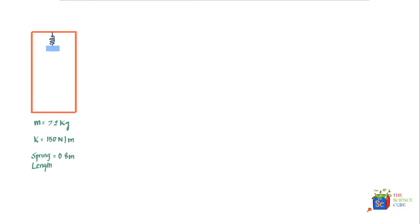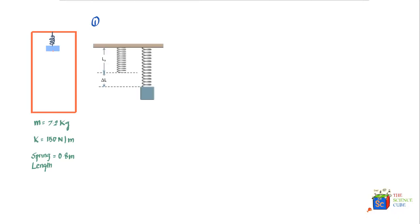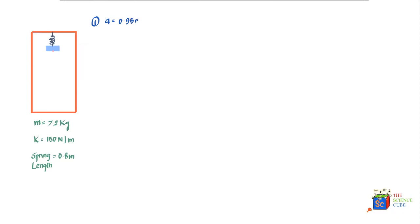There are four parts to this problem. Part one asks: what is the stretch in the spring? Remember the unstretched length is 0.8 meters, and the question is what is the stretch if the elevator moves up with an acceleration of 0.95 meters per second squared.